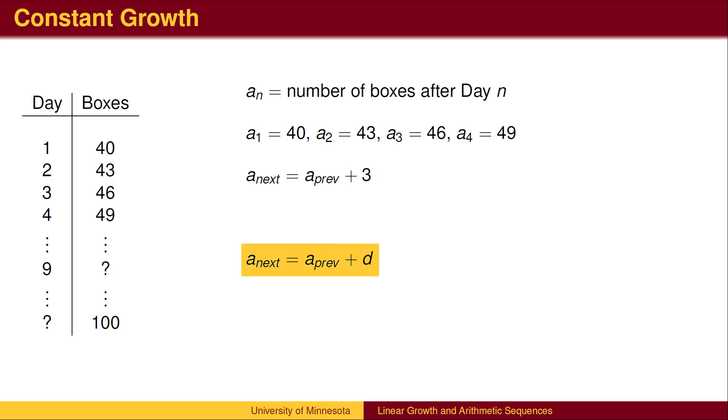The amount added is called the common difference and is denoted d. Thus, in general, an arithmetic sequence has a recursion with the next term being the previous term plus the common difference. There is only one other piece of information necessary, and that is the starting point.